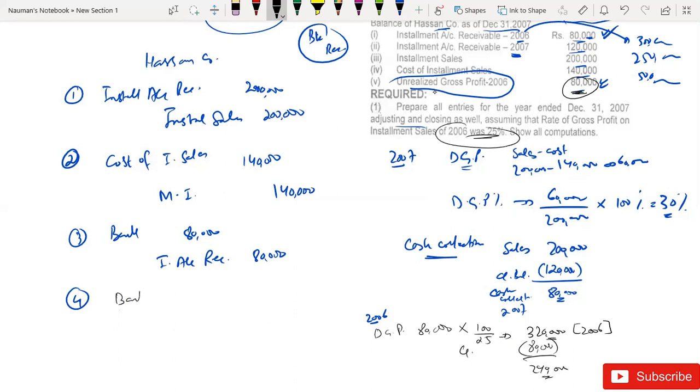So I have passed the entry: bank debit 240,000 and installment account receivable credit 240,000. This account receivable pertains to 2006, and the previous account receivable pertains to 2007.